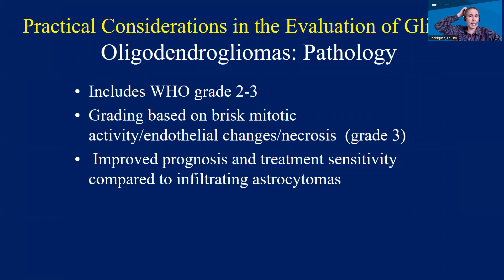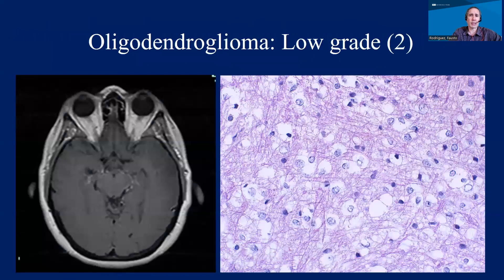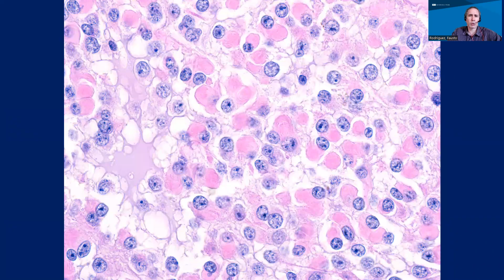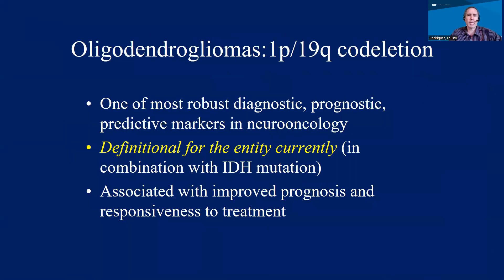Another subtype of glioma is oligodendroglioma, historically known as a diffuse glioma that has a better prognosis than other tumors and increased sensitivity to treatment. They are not as aggressive-looking at the histologic level compared to glioblastomas — they tend to have very delicate round cells with round nuclei. At the molecular level, something very characteristic is the 1p-19q co-deletion in addition to the IDH mutation. In the group of diffuse gliomas affecting adults, it is the group of tumors probably associated with the best prognosis, and we look for those features at multiple levels.